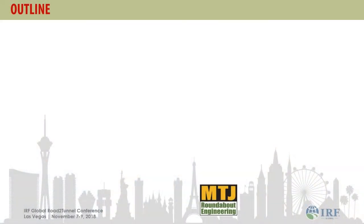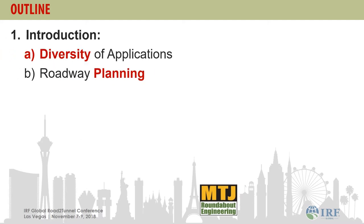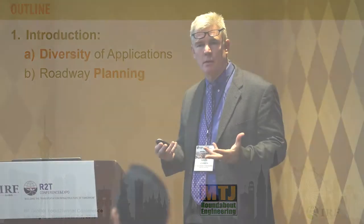Roundabouts — the light bulb went off for me a long time ago in terms of what they can do for our system. My outline today is broken up into three primary components. The first part is the diversity of applications. When I first started trying to promote roundabouts, it was always: well, you can't put them there. So I want to show you I've been working on roundabouts in all contexts and almost all situations.